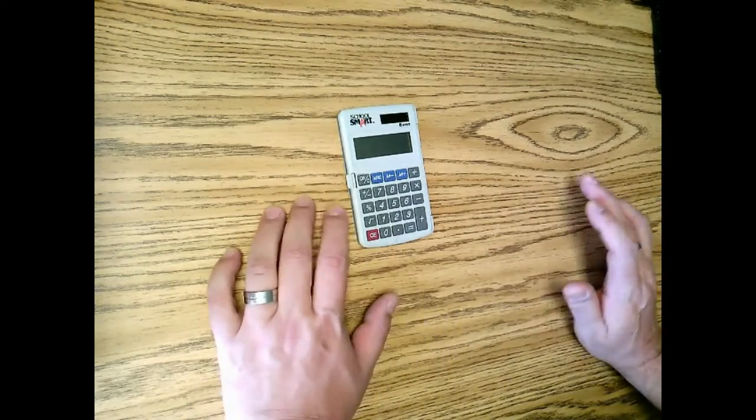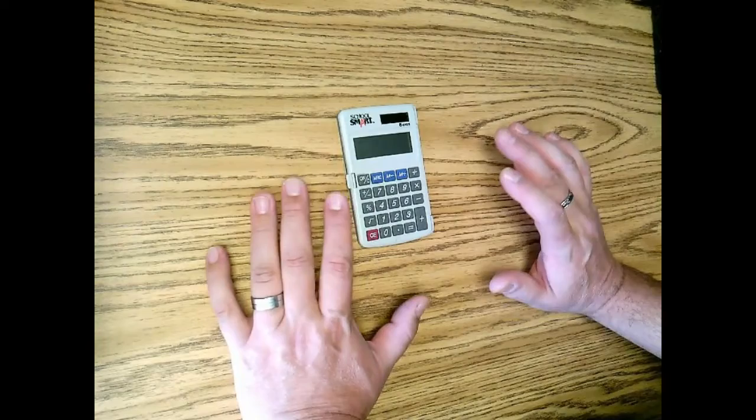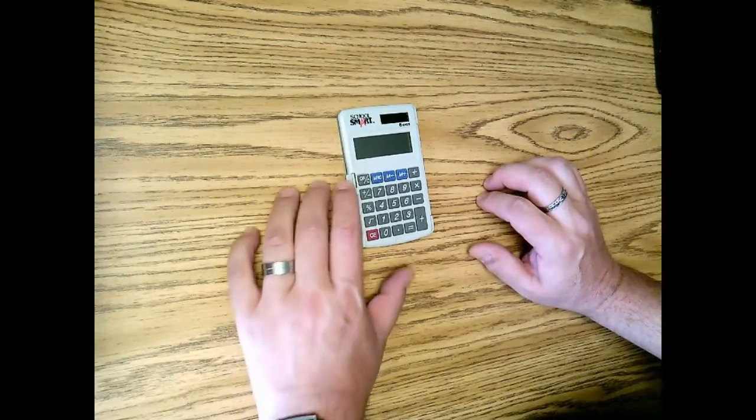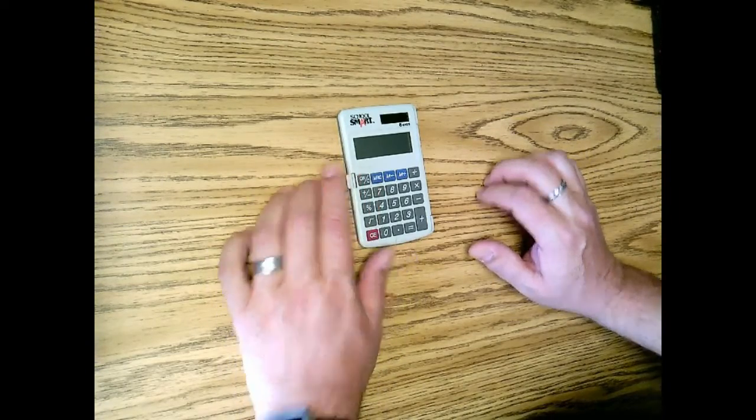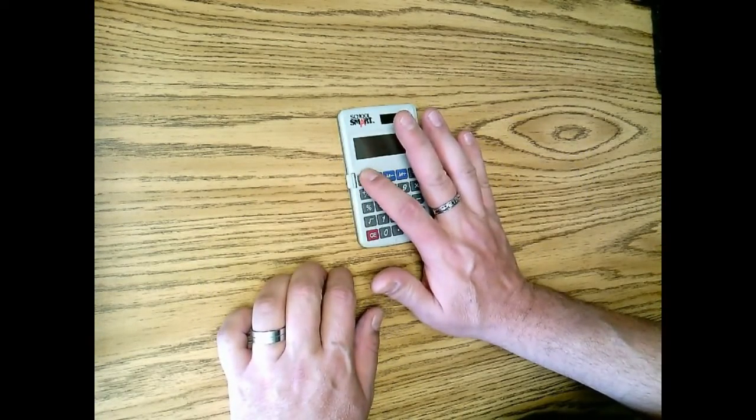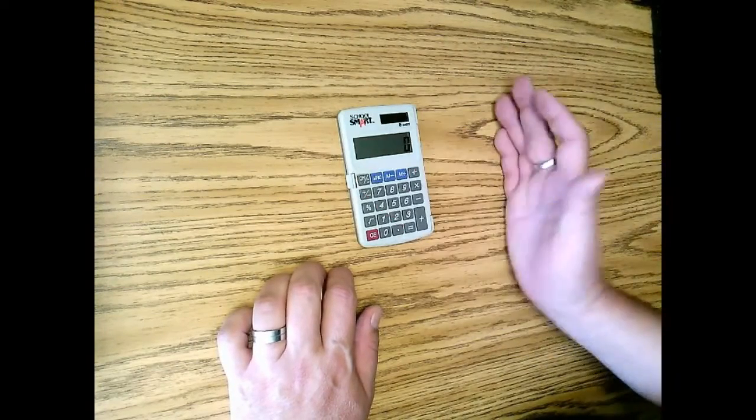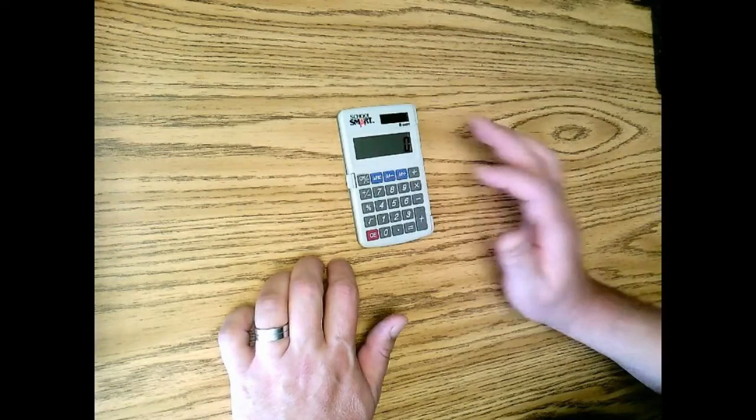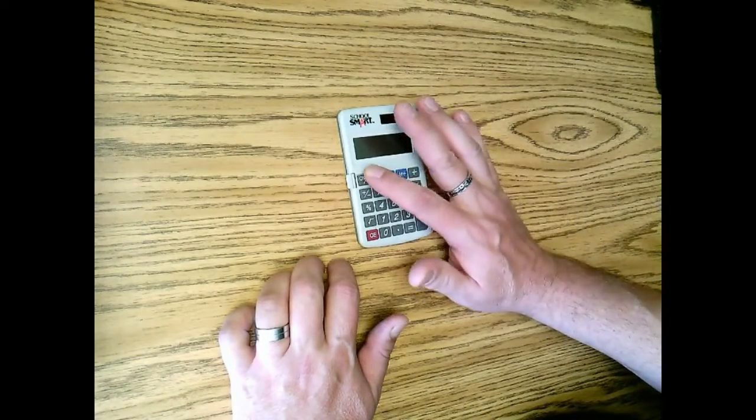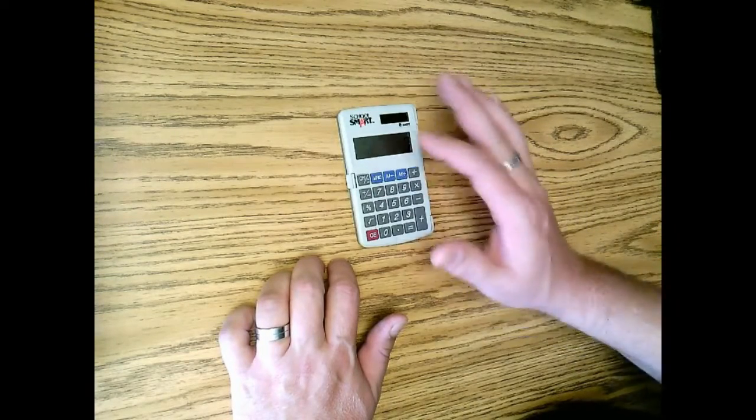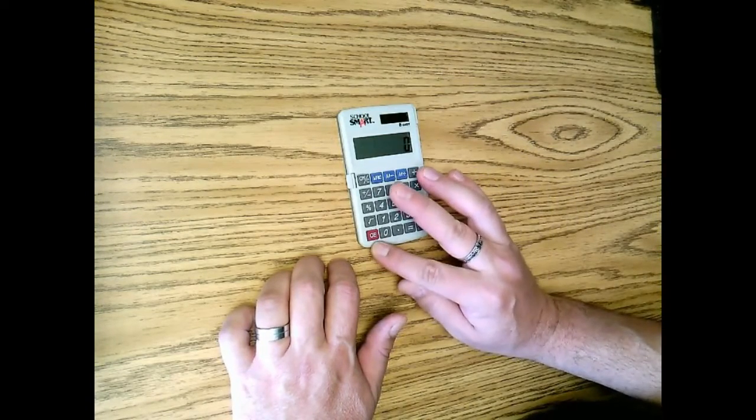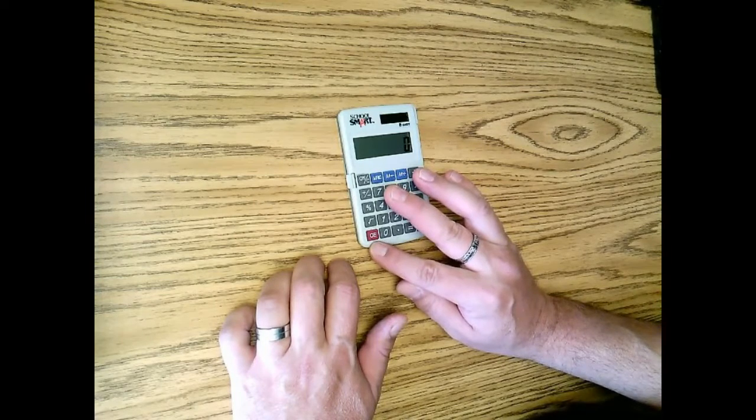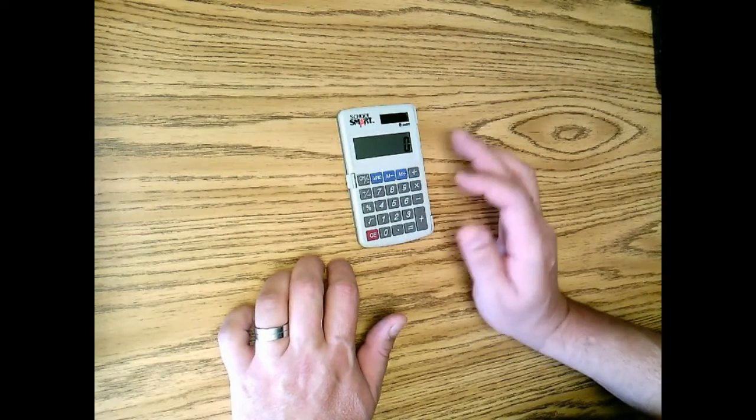Almost all calculators have an on button that may or may not have an off button. On this calculator, the on key is right there, so you just press on and it's there. The on and the clear button are on the same key, and you have this which is CE, which is clear entry, and I'll show you that in just a few minutes.